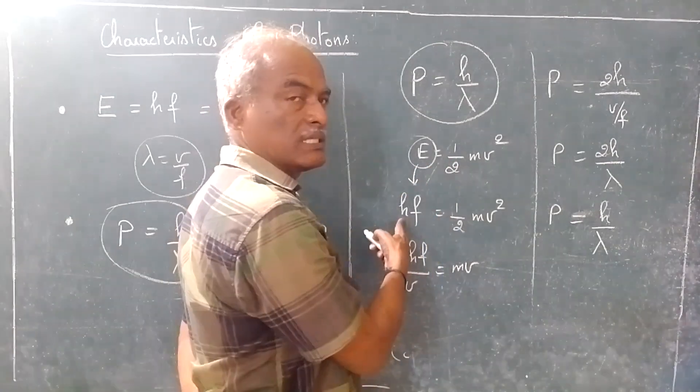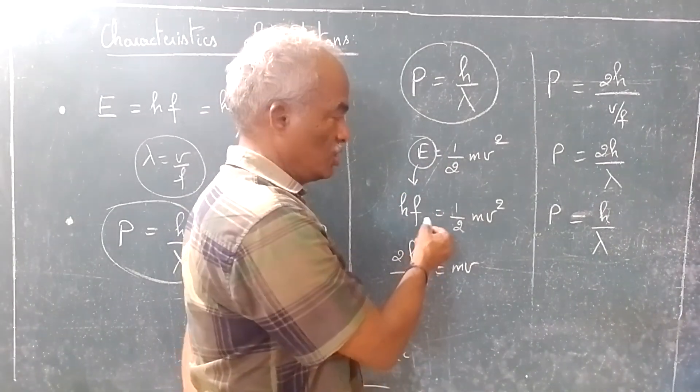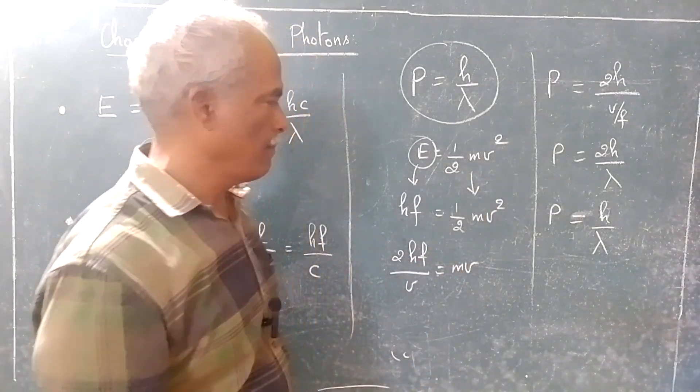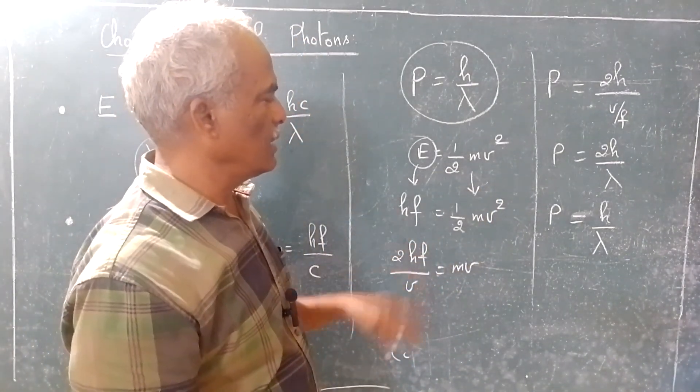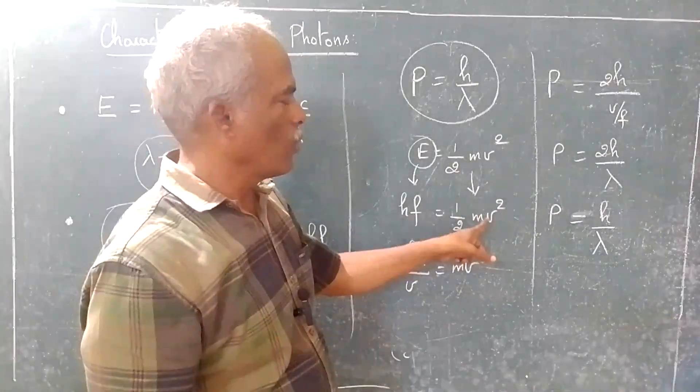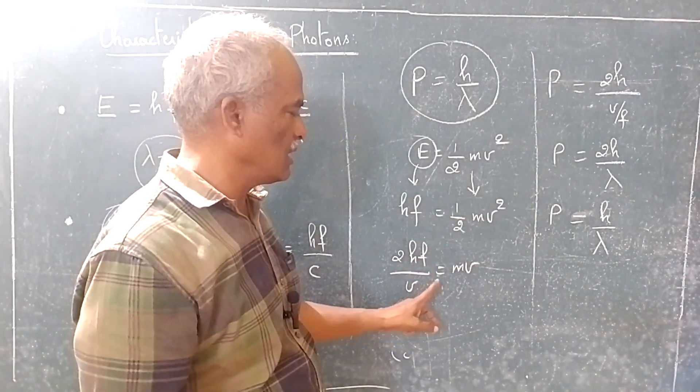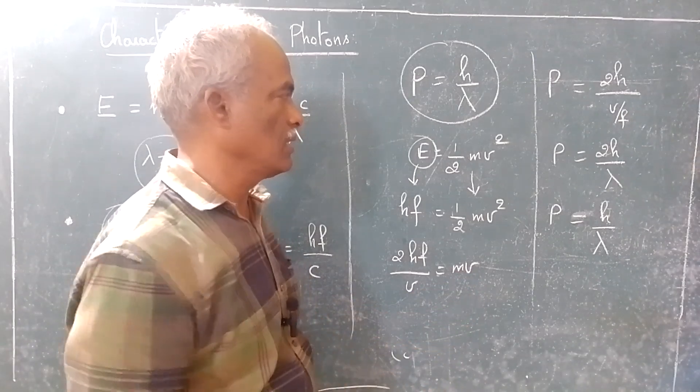Energy is equal to Planck's constant multiplied by frequency, h times f. Bring this term as is. Move this to this side and one velocity to this side. So, 2hf by velocity equals mass times velocity.